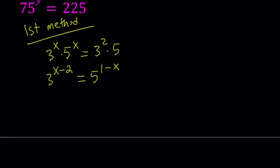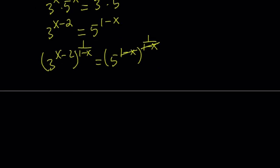From here I can actually isolate the 5 by raising both sides to the power 1 over 1 minus x. Of course x does not equal 1. And the motivation behind that is to get a 5 on the right hand side because these two are going to cancel out. So from here we get the following: 3 to the power x minus 2 divided by 1 minus x equals 5.